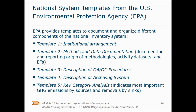The Environmental Protection Agency provides templates to document and organize different components of the national inventory system. The templates can help inventory teams in documenting and reporting the methodologies, data sets and assumptions used to estimate emissions and removals from each category. They can also be used as supporting information for national communications to provide transparency on the data and methods used, and they help future inventory teams in preparing future inventory reports. For example, template 3 asks for a description of QA and QC procedures. It helps in constructing the plan to perform quality assurance and quality control and offers step-by-step guidance and checklists for doing this.